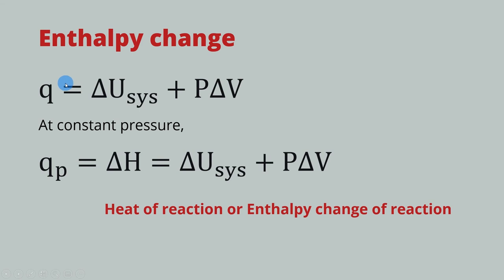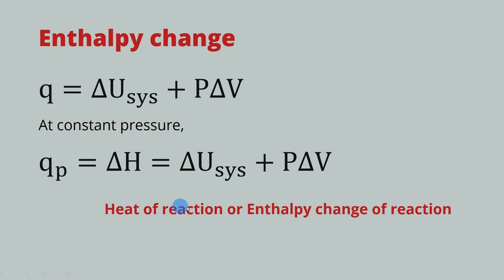For most chemical reactions, we carry out the reaction under constant pressure. Under constant pressure conditions, Q becomes QP, indicating the constant pressure condition. This QP is given a new name: delta H, or enthalpy change. It is equal to the change of internal energy of the system plus work. This is called the heat of reaction, or enthalpy change of the reaction.